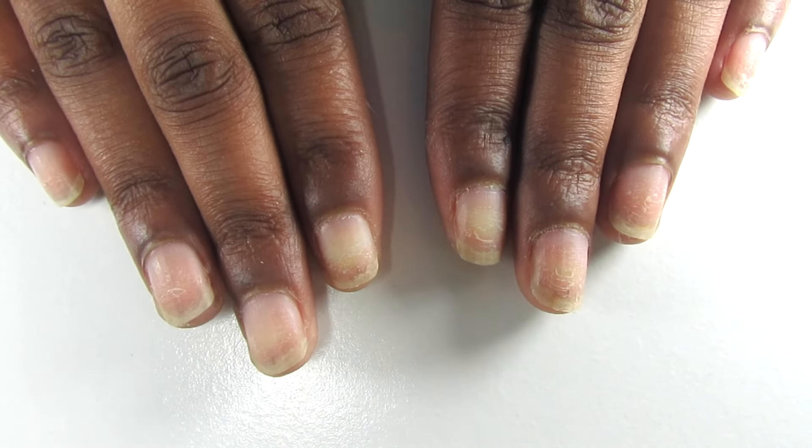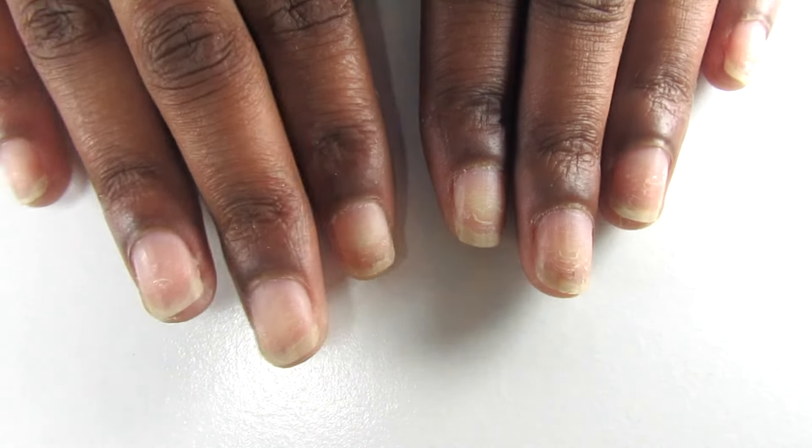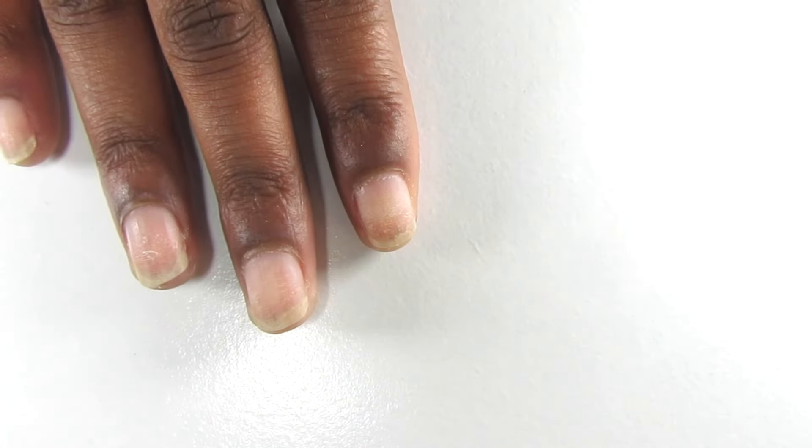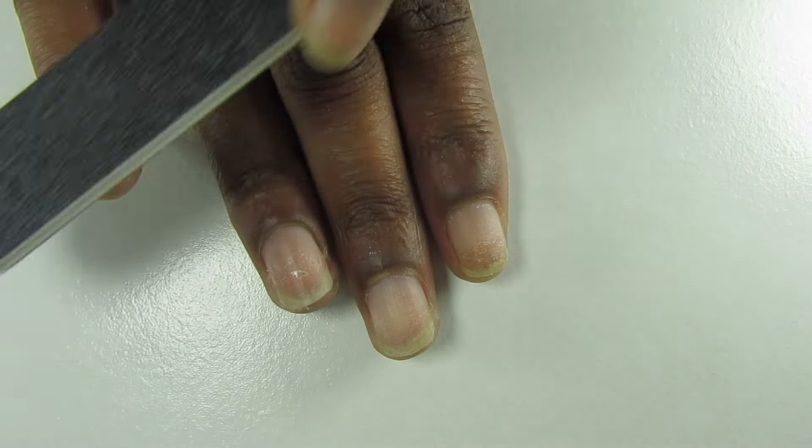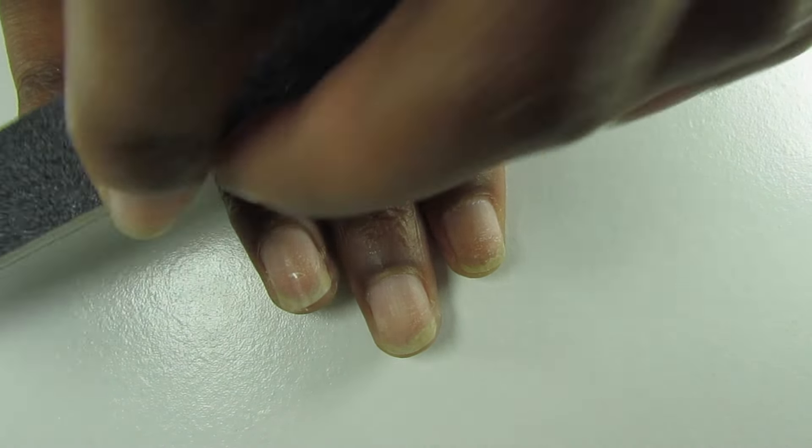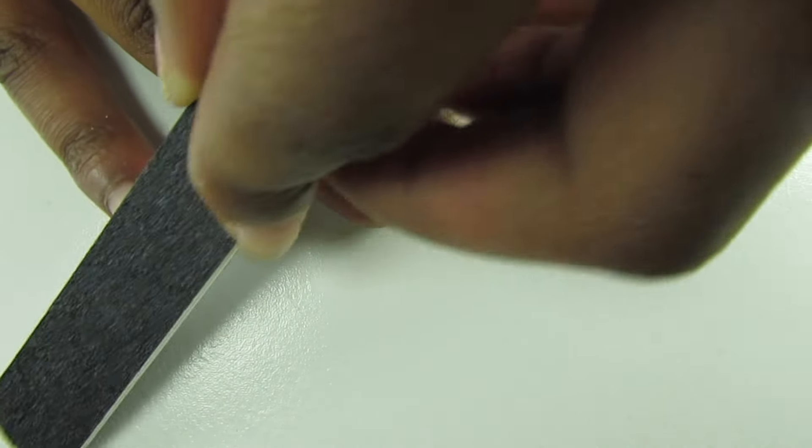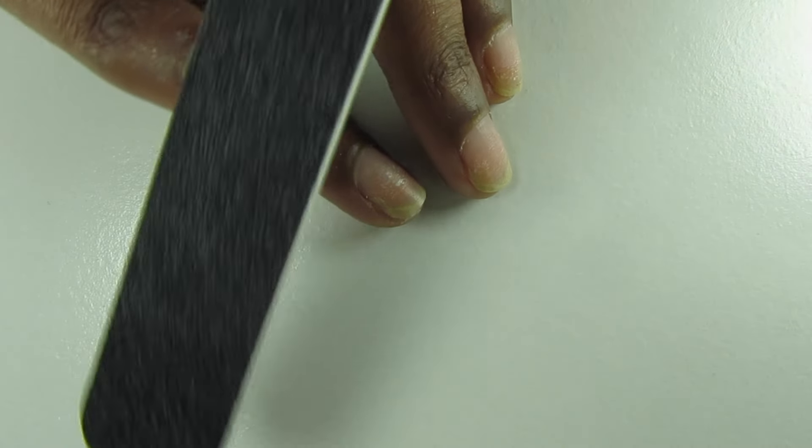We're going to start off with clean nails. Wipe them with alcohol and a cotton pad if you need to get rid of any oil or dirt. First we're going to start by filing our nails. This just creates a gritty texture so the nail glue and the nails can adhere better to your nail bed.